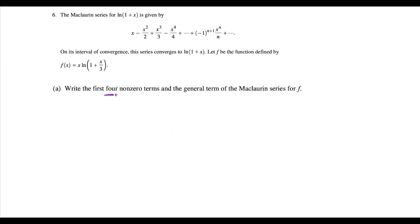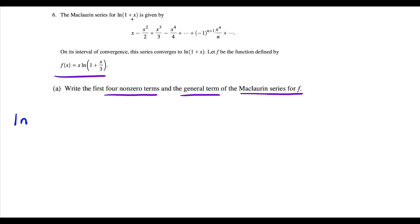For part A, we're writing the first four non-zero terms and general term of the Maclaurin series for f of x, and f of x is given here. This is one of those questions where we're starting off with the power series and we have to use it to build a Maclaurin series for f of x. The first thing we could do is take natural log of 1 plus x and replace the x with x over 3.